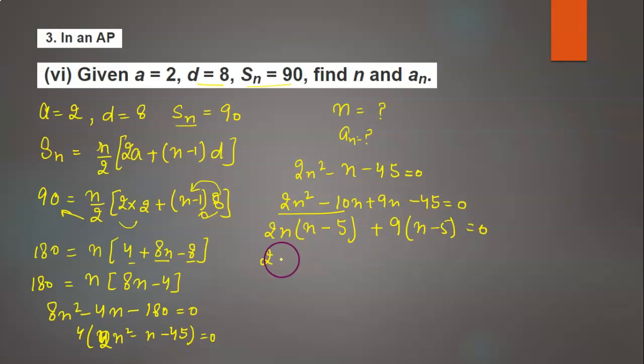Now in the whole term we will get (2n plus 9) times (n minus 5) equals 0. So when this equals 0, we will get n equals negative 9 over 2.